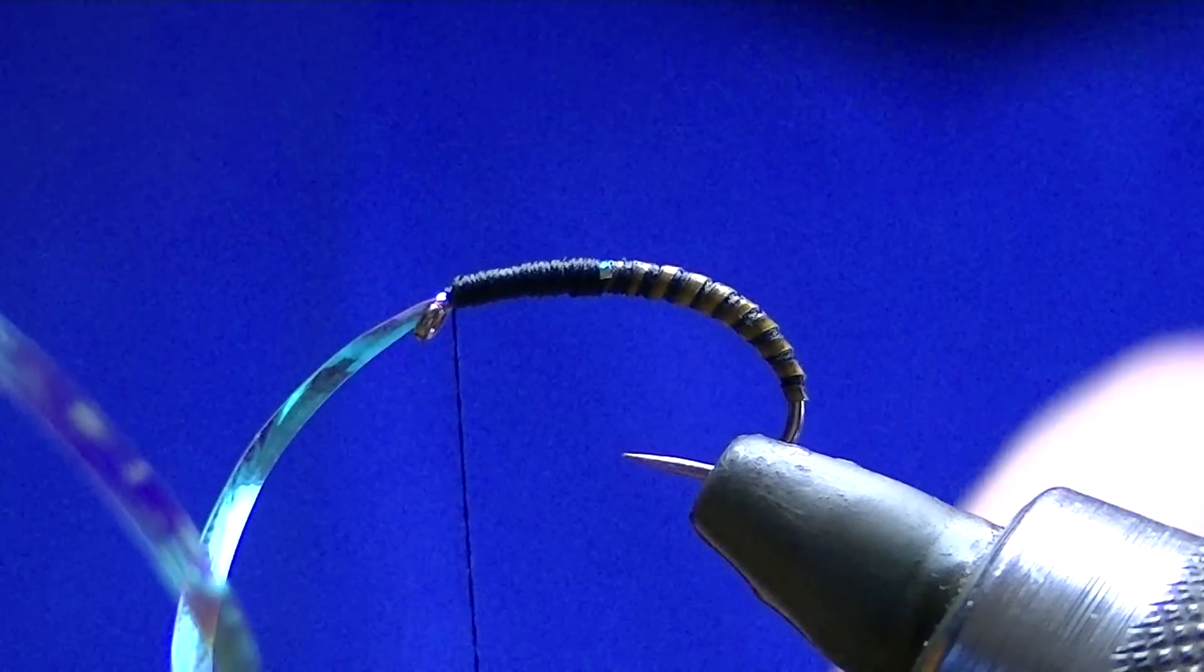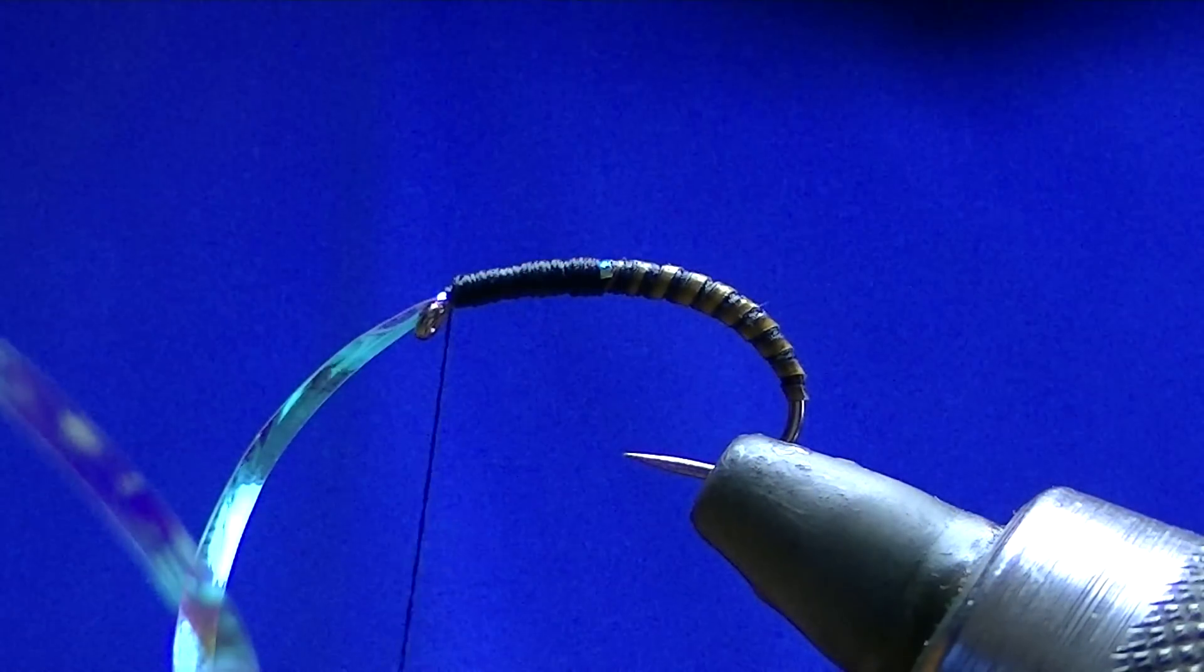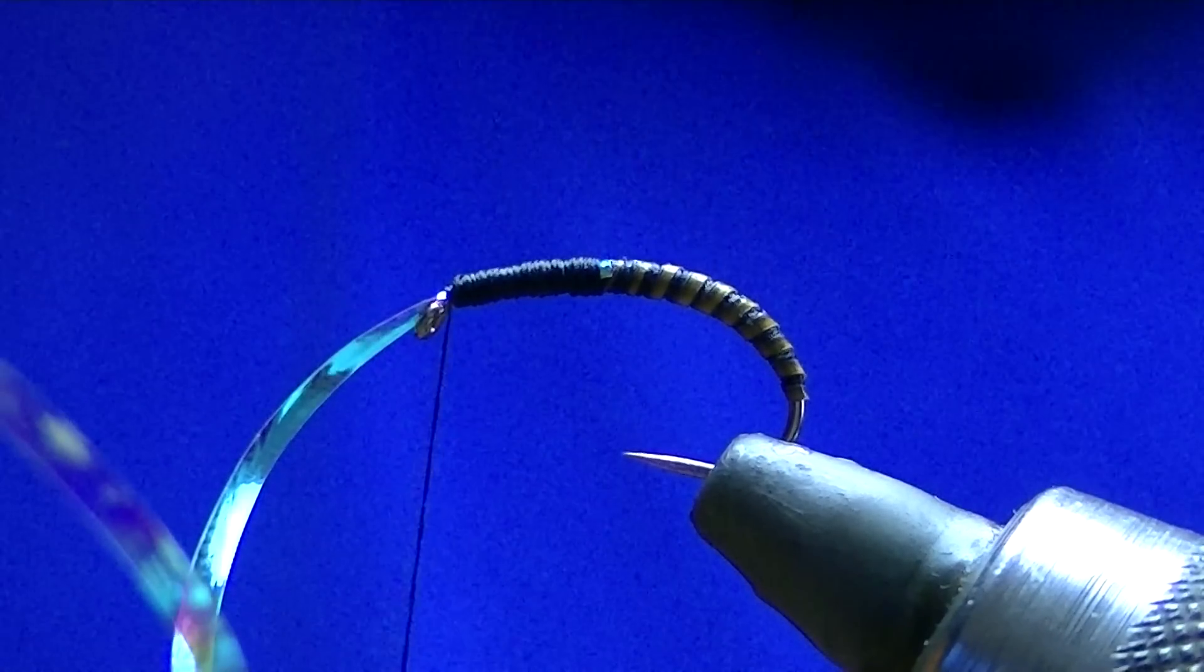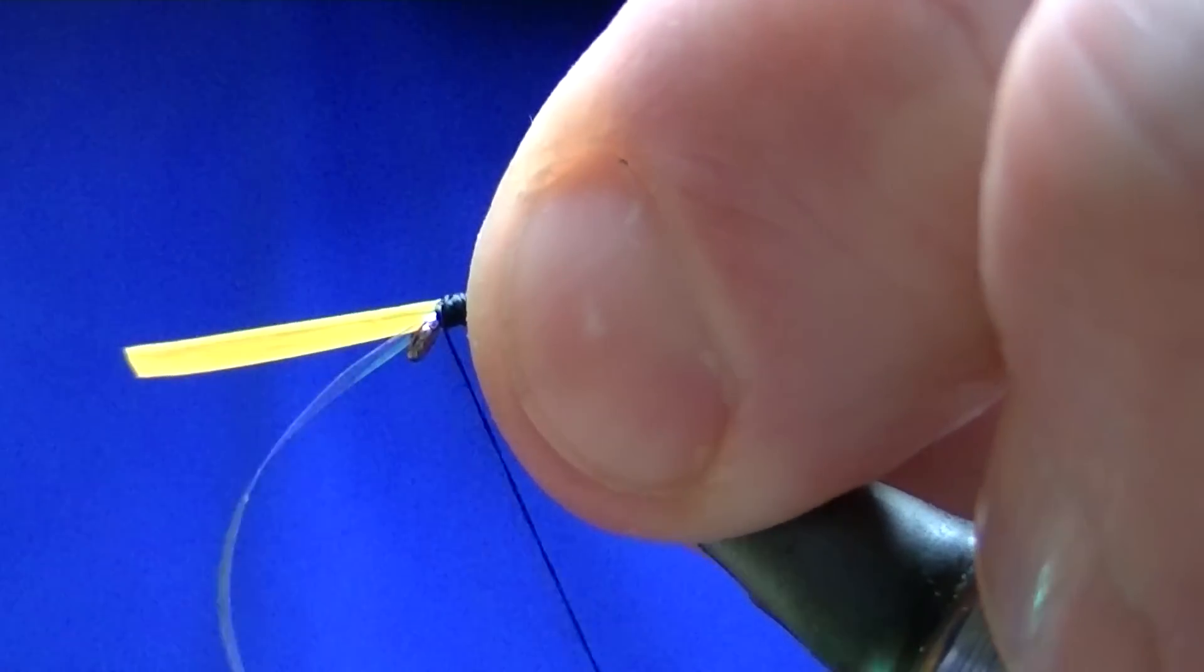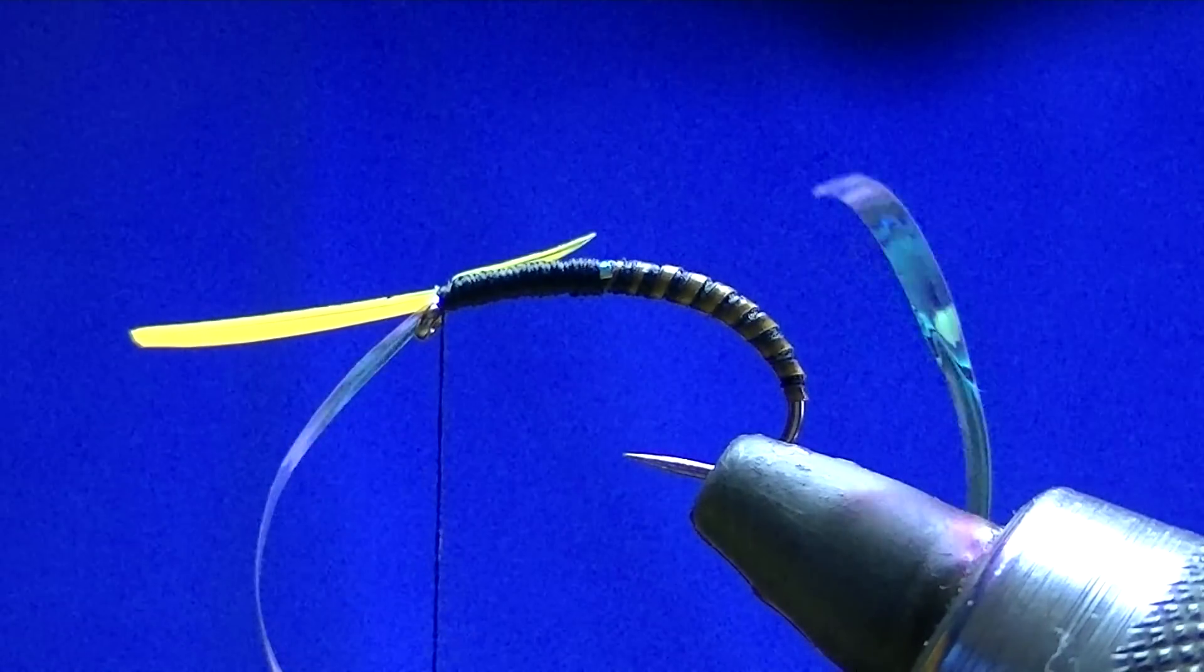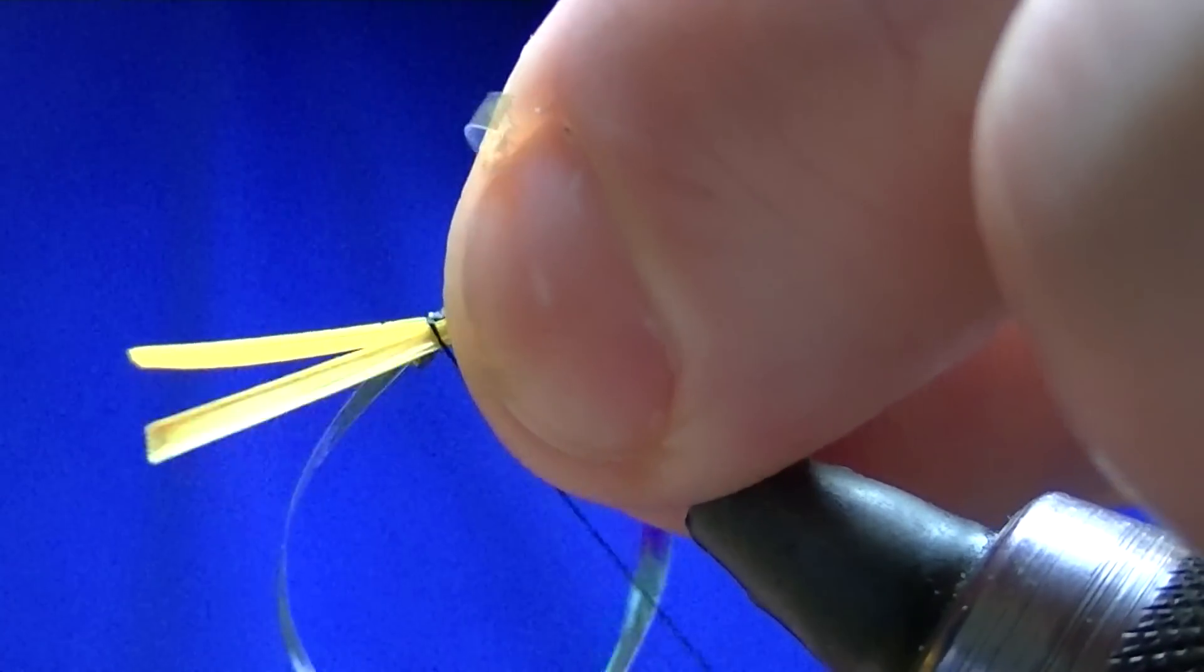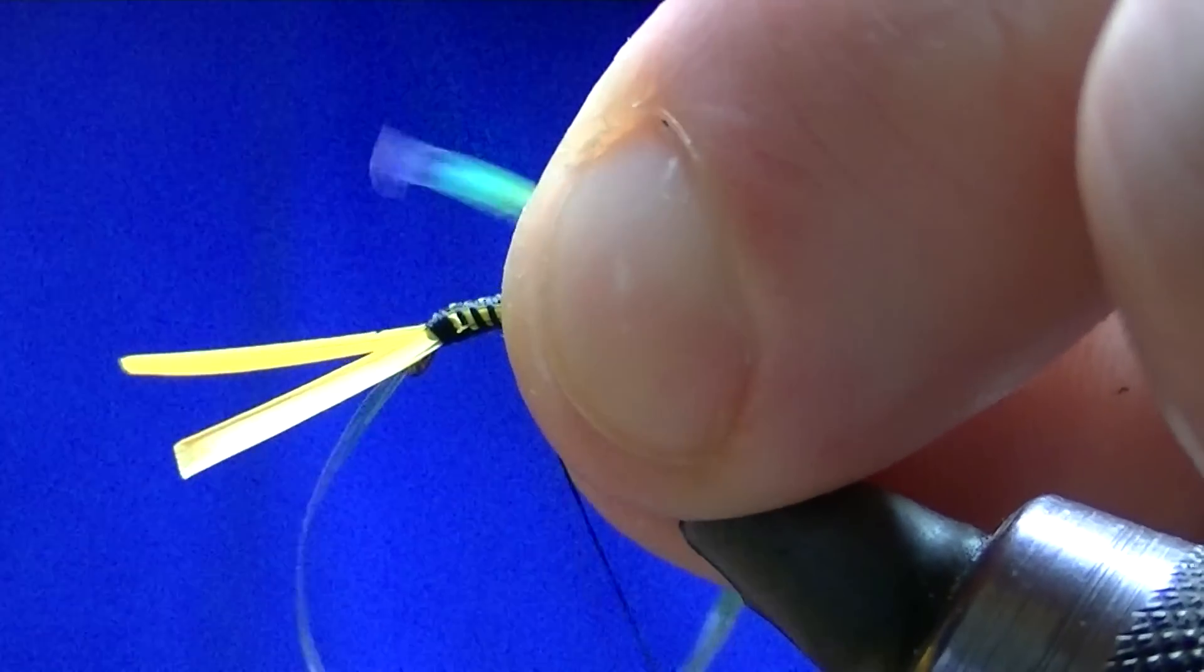Now I'm going to use some Sunburst Goose Biots. As you can see they're very yellowy orange rather than the brighter orange ones. Once they're varnished you get a much better color. Then I'm just going to catch that in. I'm going to do the same on the other side. Just line it up so they're about the same. Catch it in, hold the two bits and work your way back.